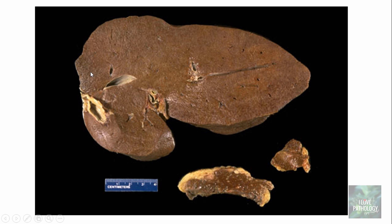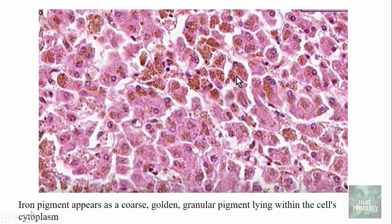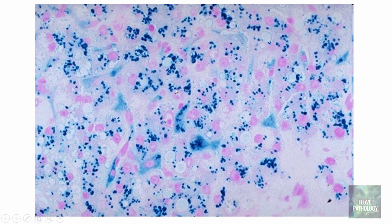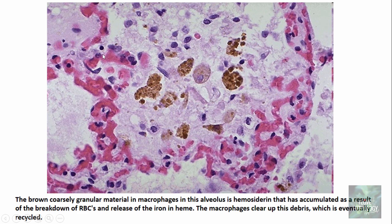Deposits of iron in the liver produce a grossly dark chocolate-brown color due to the pigment. Microscopically, the iron pigment appears as coarse golden granular pigment lying within the cell's cytoplasm around the nucleus. Iron is demonstrated by a special stain — Pearl's Prussian blue stain. In chronic venous congestion of the lung, you can see hemosiderin-laden macrophages in the alveolar lumen; these macrophages have engulfed hemosiderin accumulated as a result of breakdown of red blood cells.